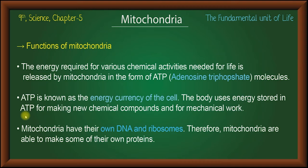Sugars like sucrose, fructose, and glucose — these are the sources. The energy currency of the cell is called ATP.